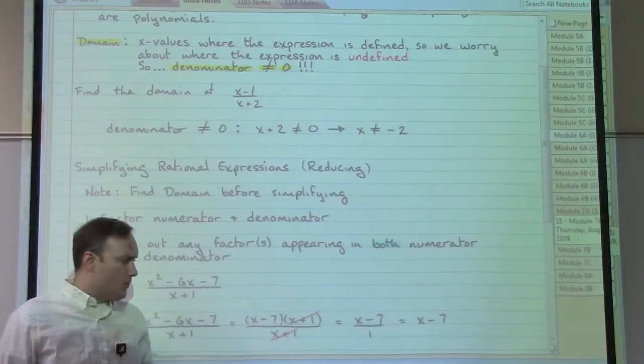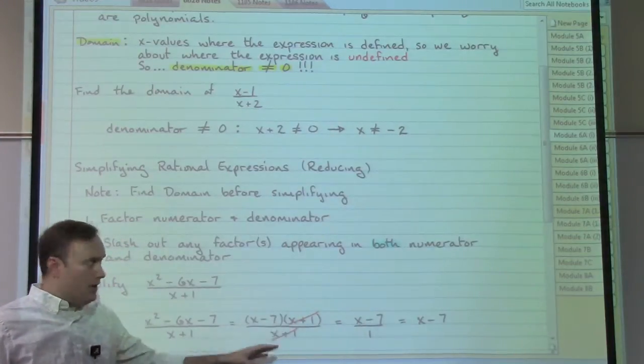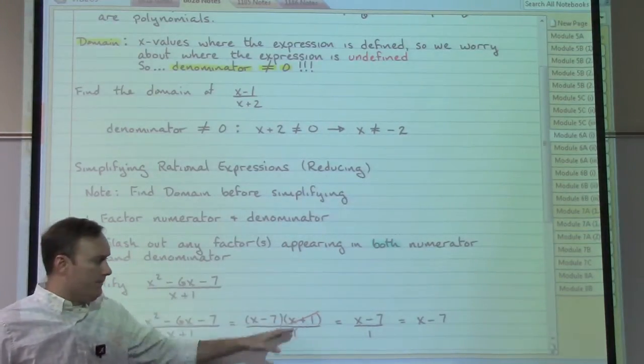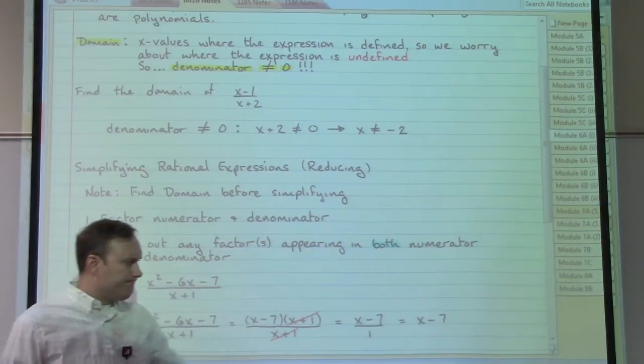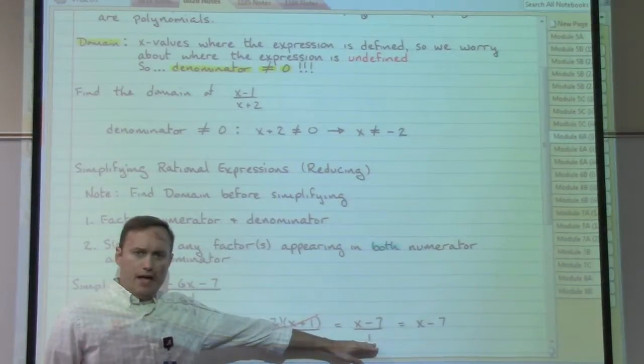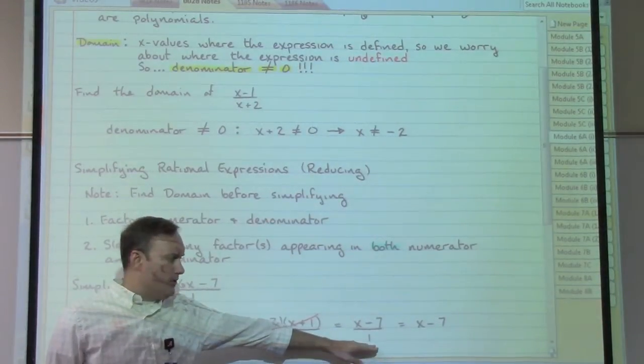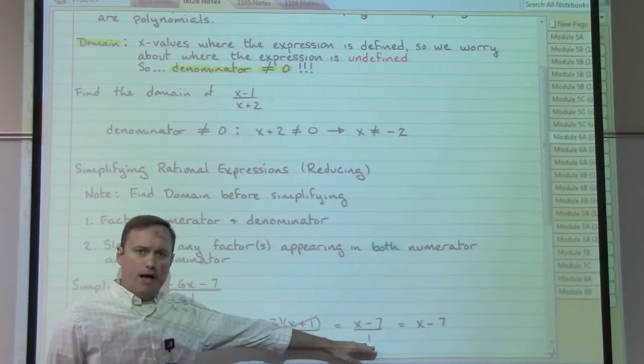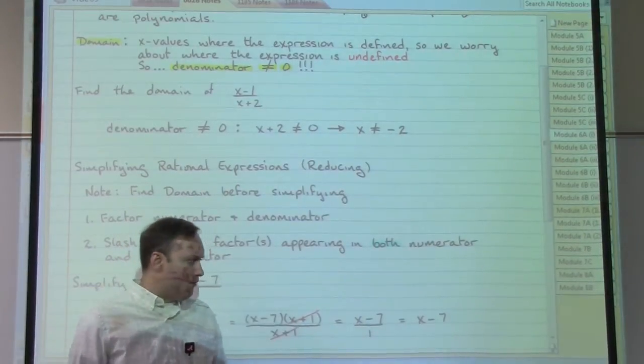That means that there is an x plus one factor on the top as well as an x plus one factor on the bottom. So according to our step two here, we slash those out. If we're left with nothing else, we at least have a one. So in this particular case, we have a one on the bottom.